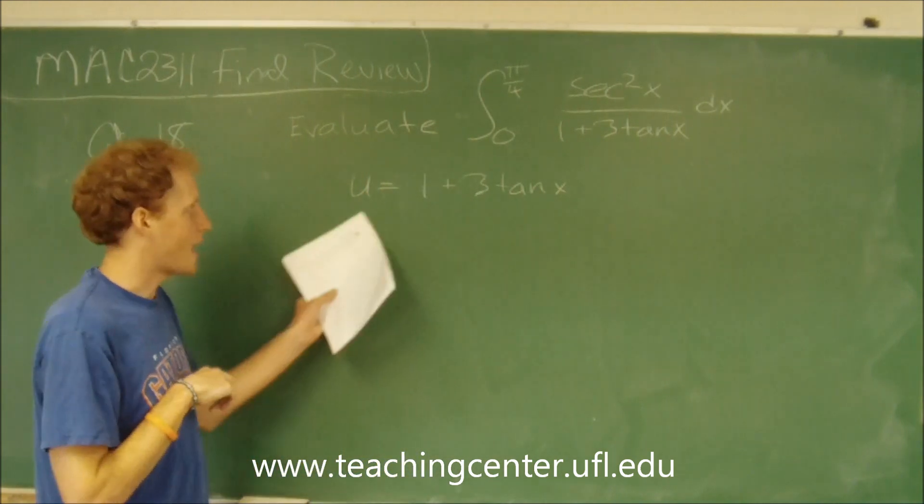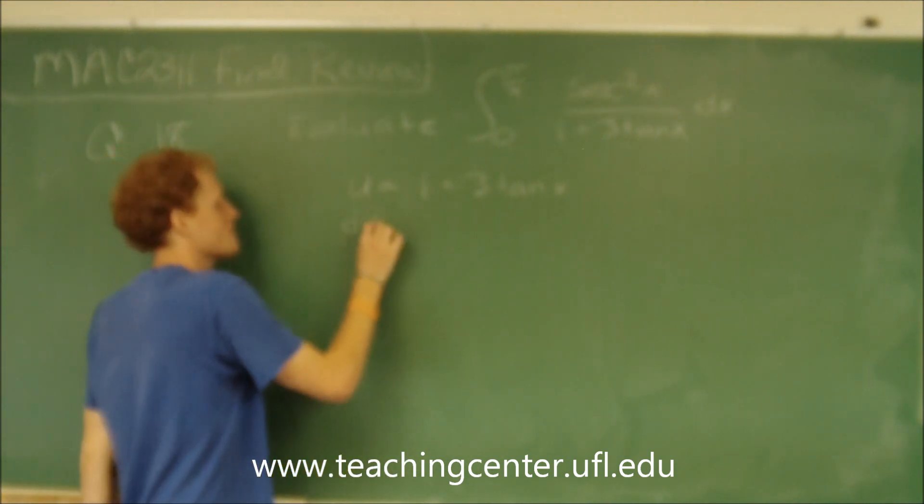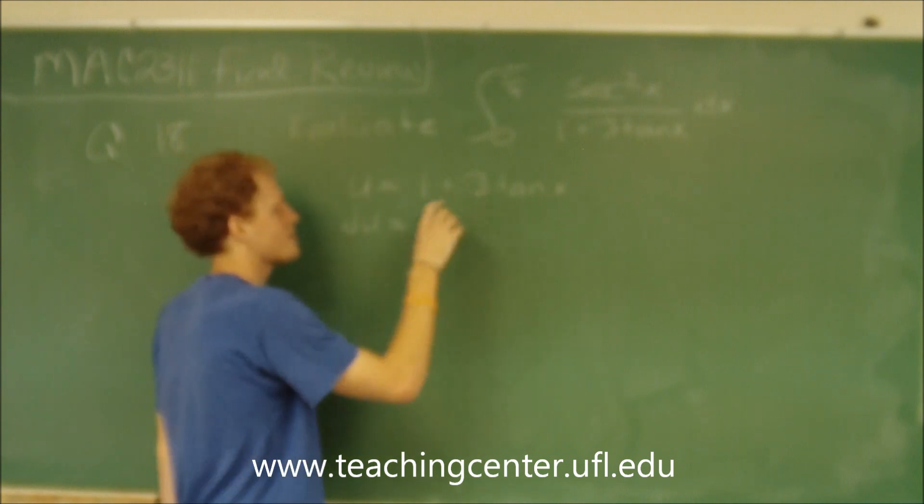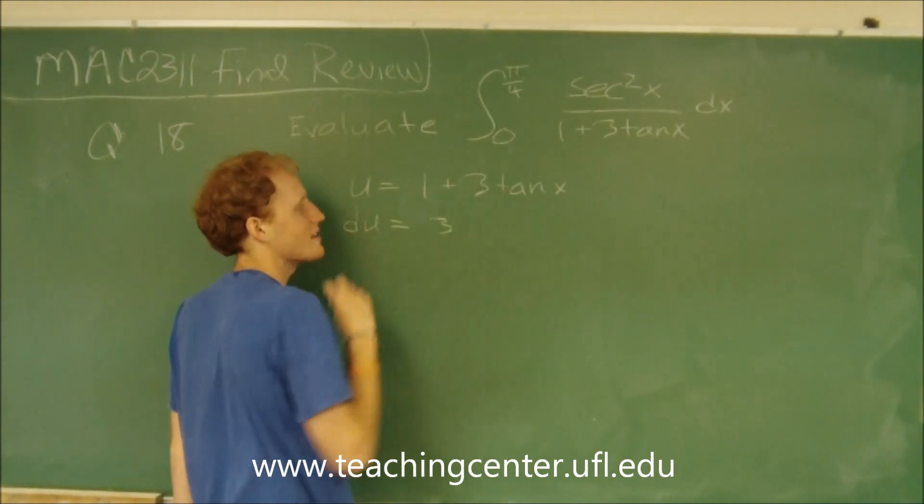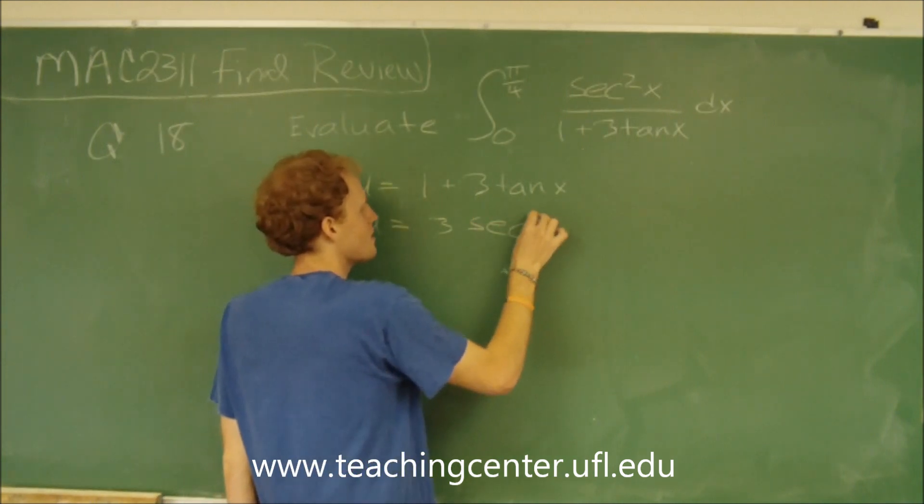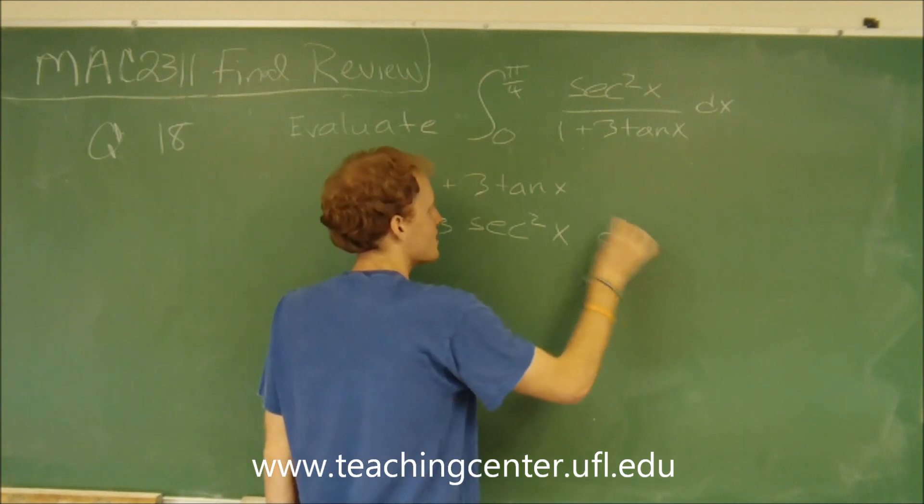So we have u. So now we need something for du. So let's take the derivative. du is going to equal 0 plus 3 times the derivative of tangent of x, which is the secant squared of x, times dx.